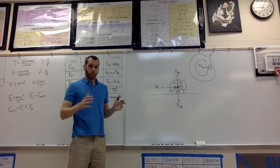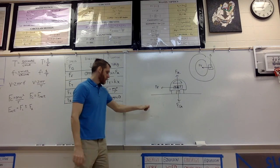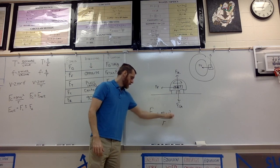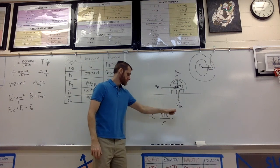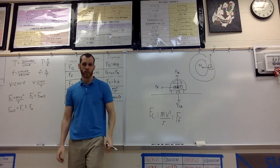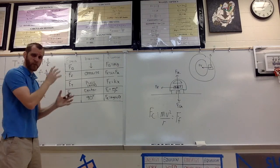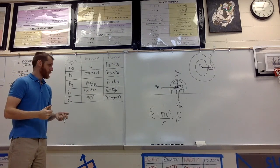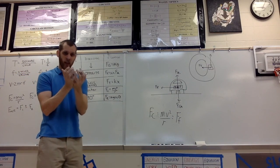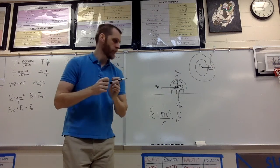If I write a net force equation for this, Fc equals mv² over r equals friction — because gravity and the normal force cancel out, it's just friction. Friction causes the centripetal force. Centripetal force is caused by the result of all the other forces put together — whatever force doesn't cancel out is the centripetal force that causes the circular motion.